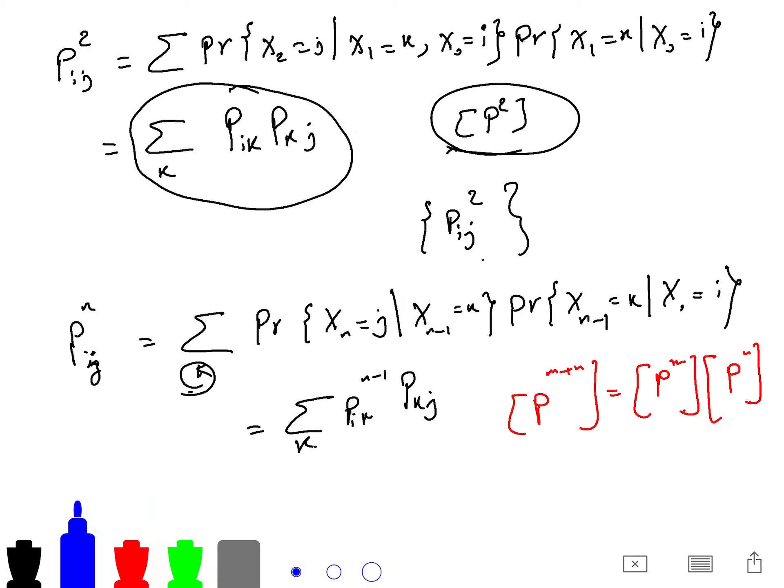And by that, I mean pij m plus n equals to sum over k, pik m, pkj n.